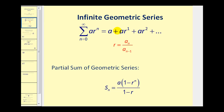To go from the first term to the second term, we multiply by r. To go from the second term to the third term, we multiply by r. This will be the pattern for any geometric series. The common ratio r can be found from the terms by taking any term in the series and dividing by the term before it.